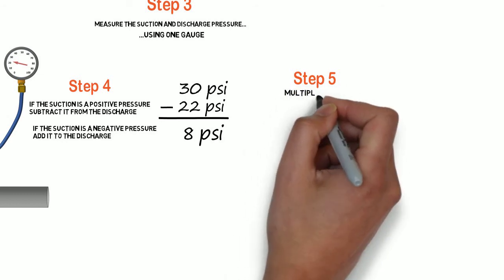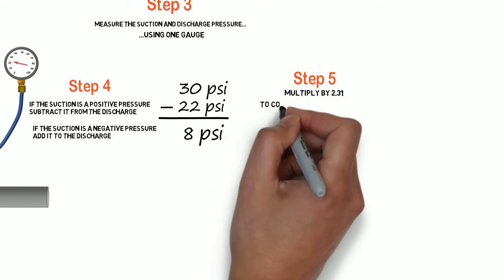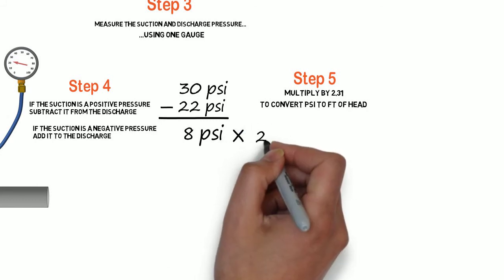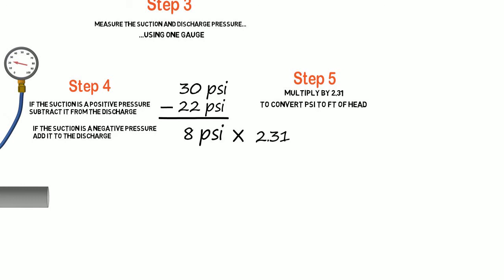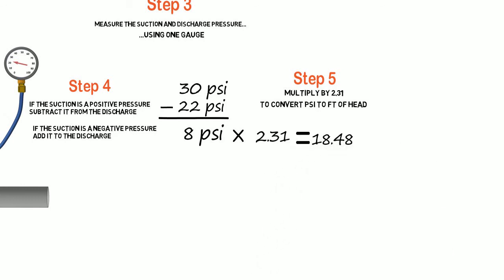Step 5: We have to convert psi to feet of head. To do that, multiply 8 psi by 2.31. That gives us — drum roll please — 18.48 feet of head, or 18.5.